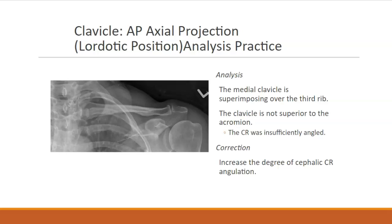Let's look at this AP axial image analysis of the clavicle. We can see that the medial end of the clavicle is superimposing over the third rib, which is fine. However, the lateral clavicular end is not superior to the acromion — it is actually in line with it. Therefore, the central ray was insufficiently angled. We need to increase the degree of cephalic angulation to appropriately position the clavicle for this AP axial projection.